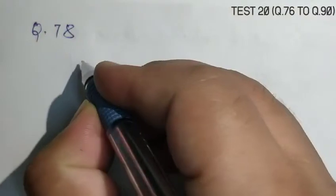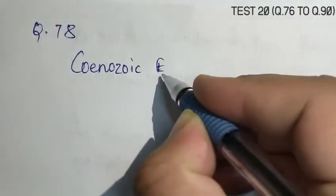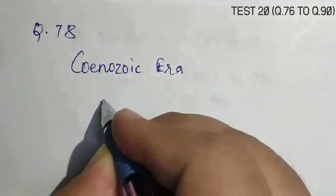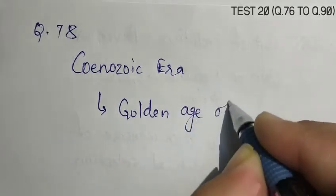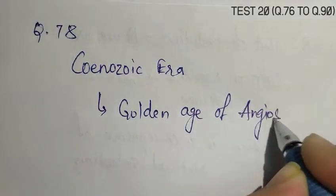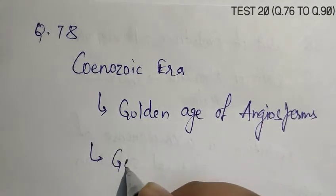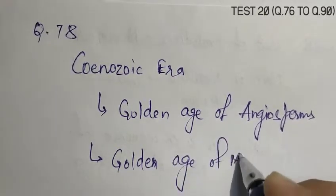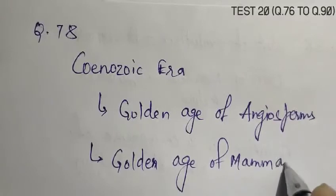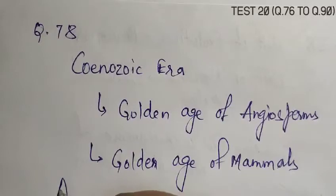Question number 78, the Cenozoic Era is known as Cenozoic Era is known as Golden Age of Angiosperms, and Golden Age of Mammals. So, the correct answer is A.